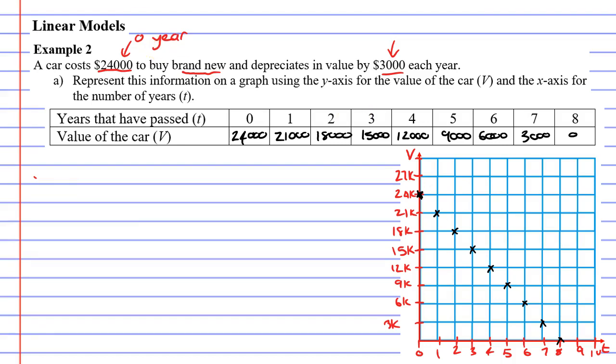Now we're going to join it with a line. And for this particular line, we really don't want to have arrows on it because we don't actually want this line to go on forever. The car was $24,000 brand new. It was never more than that. And once the car reaches $0, it can't go below that. We can't have a car valued at a negative amount. Now we've finished question A, so we're now going to move on to question B.